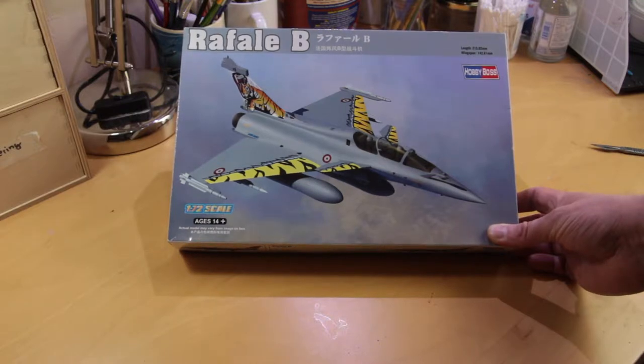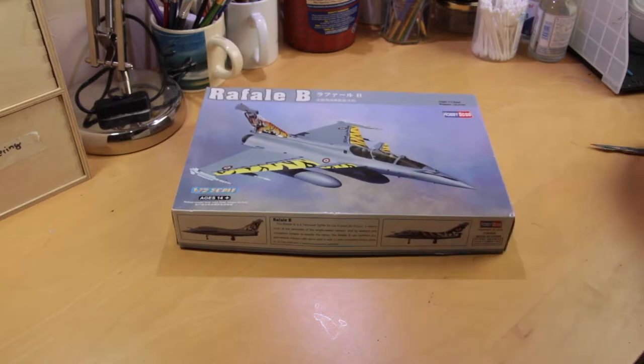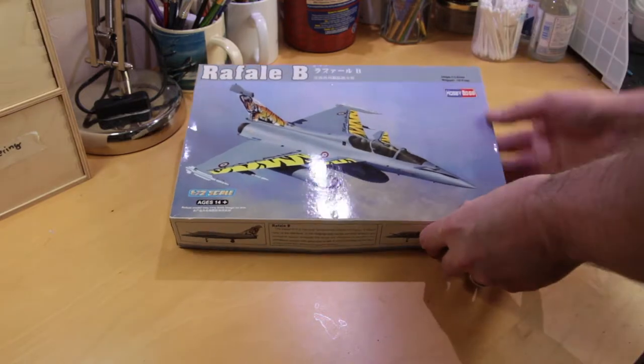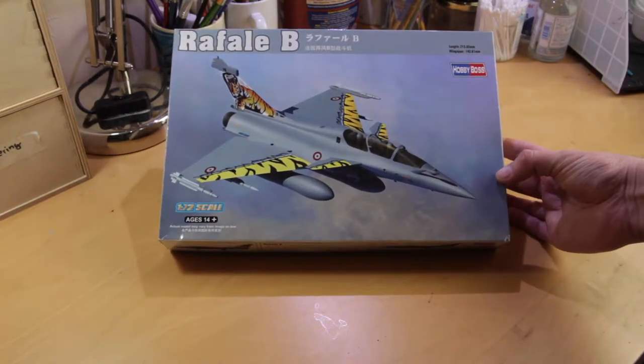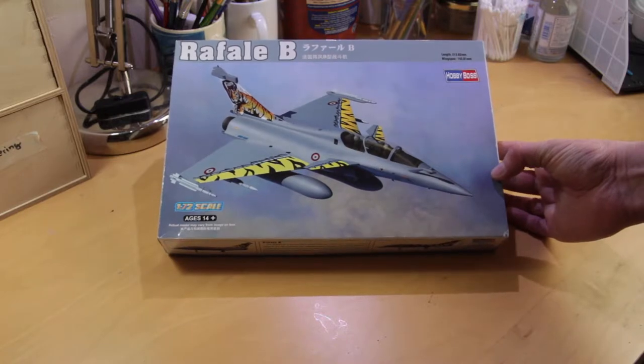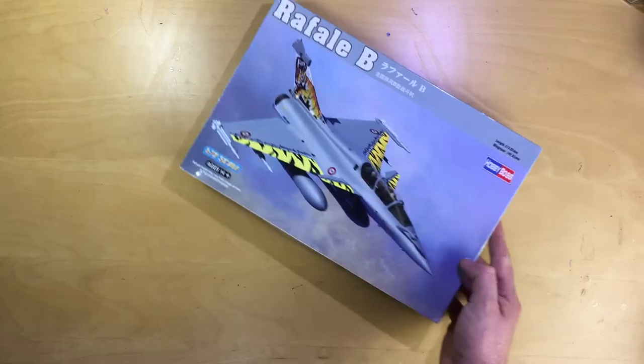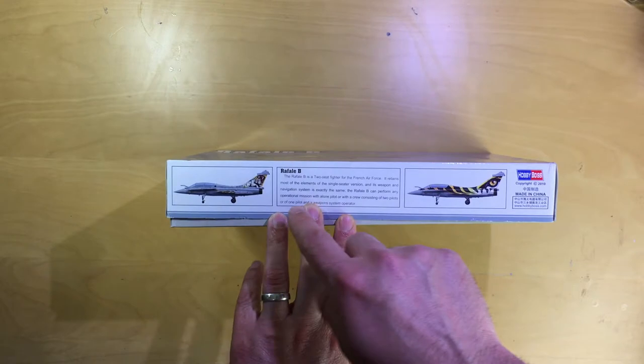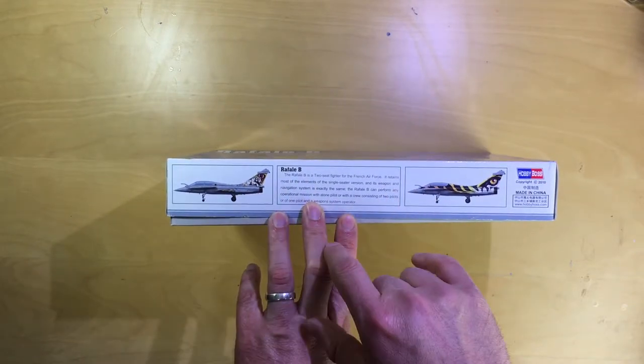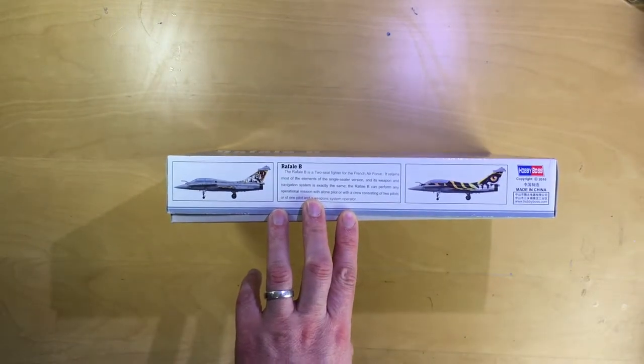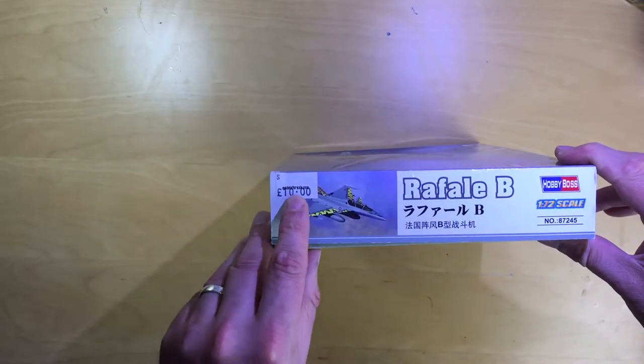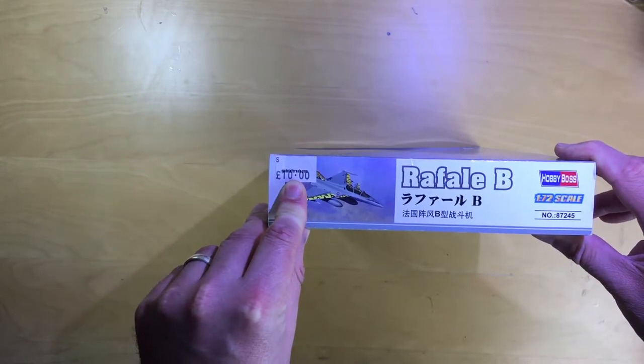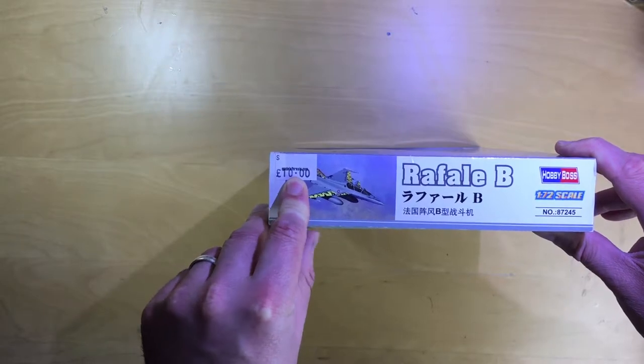On top we've got a few details about the kit. Length is 213 millimeters, wingspan is 142 millimeters. On the side we've got a little bit of blurb about the Rafale and two options for the schemes, both tiger meets and they both look absolutely stunning. This kit I got from models for sale at the IPMS Shropshire show at Cosford last weekend. Ten quid for the kit - I think that was a pretty good bargain.